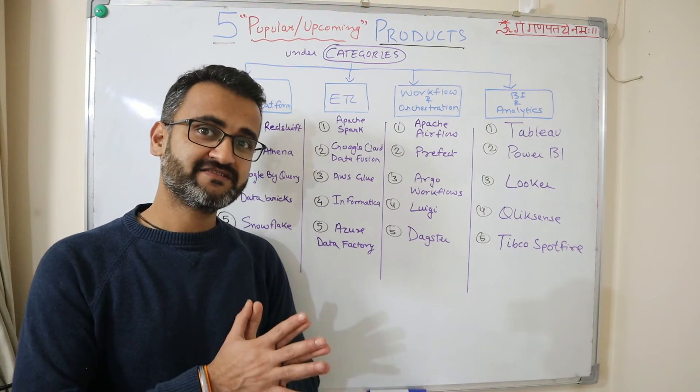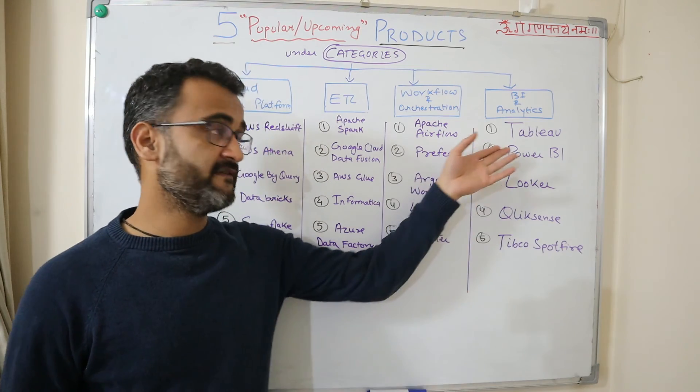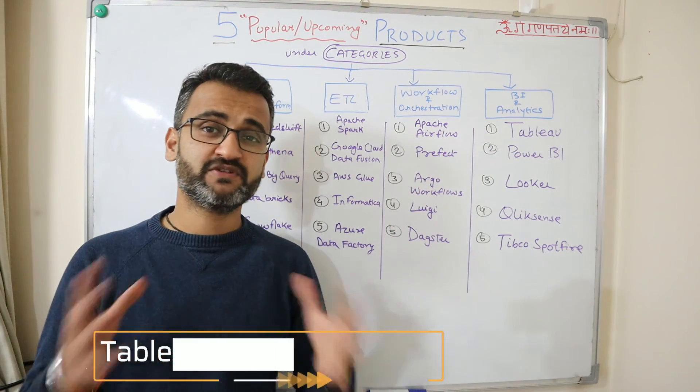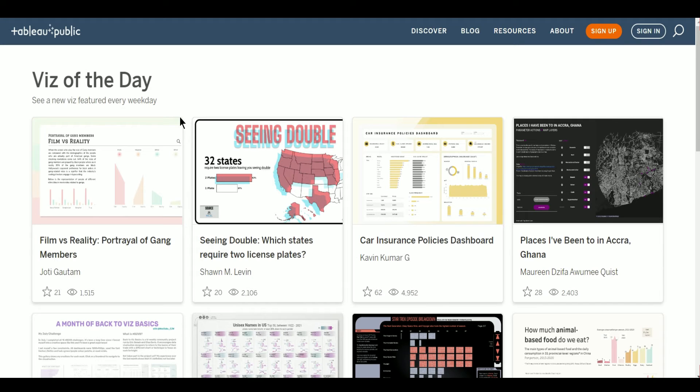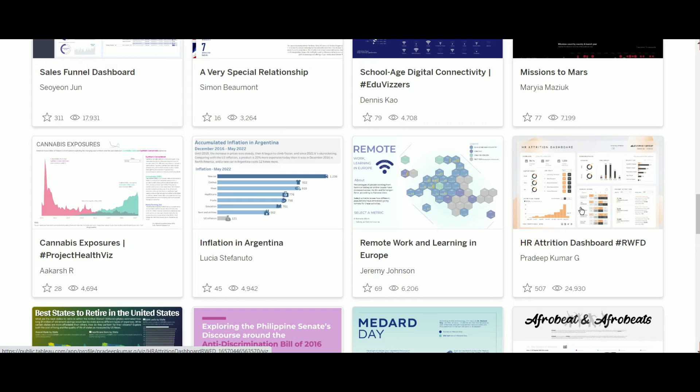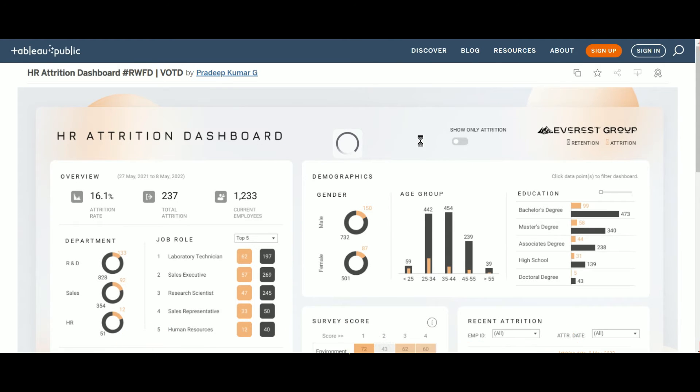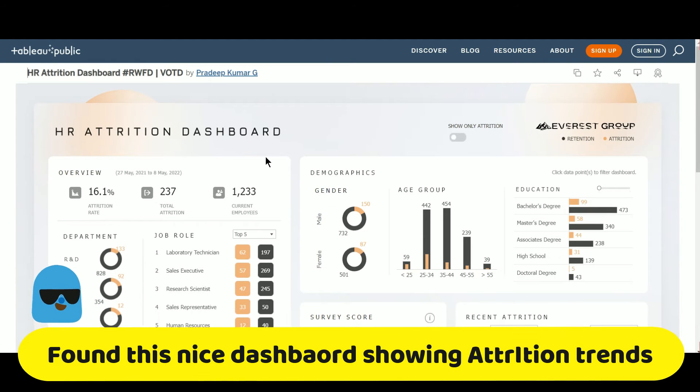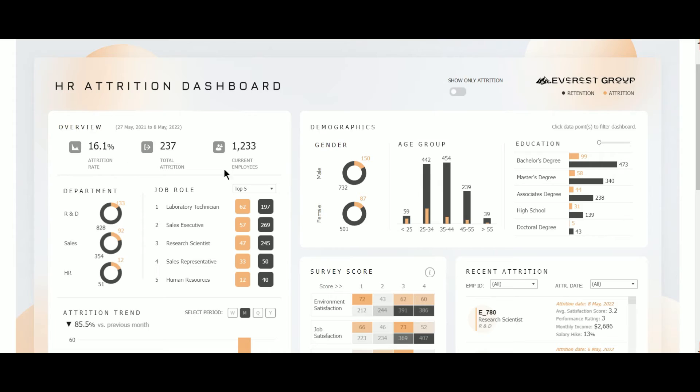Friends, in our last category which is BI and analytics, the leader is definitely Tableau. It is one of the famous products. Since 2003 it is in the market and it has seen an exponential journey and growth. In 2019 it was taken over by Salesforce, so now it is a Salesforce company, but one of the best products for pretty much all kinds of analytics and dashboarding solutions.